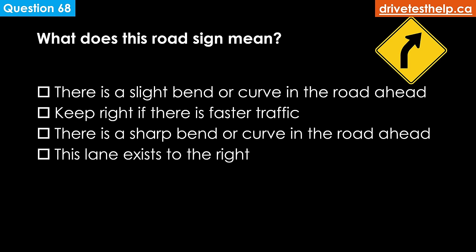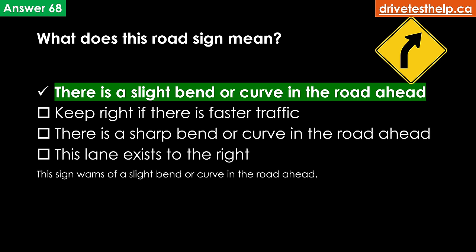What does this road sign mean? Options: there is a slight bend or curve in the road ahead; keep right if there is faster traffic; there is a sharp bend or curve in the road ahead; this lane exits to the right. The correct answer is there is a slight bend or curve in the road ahead.